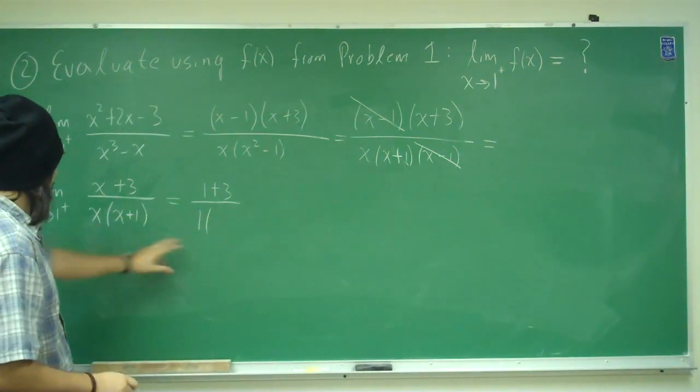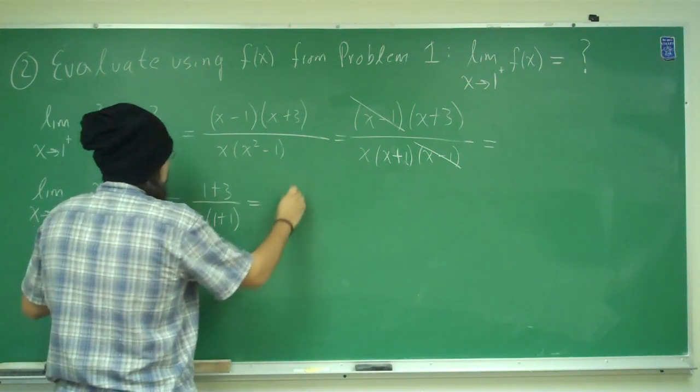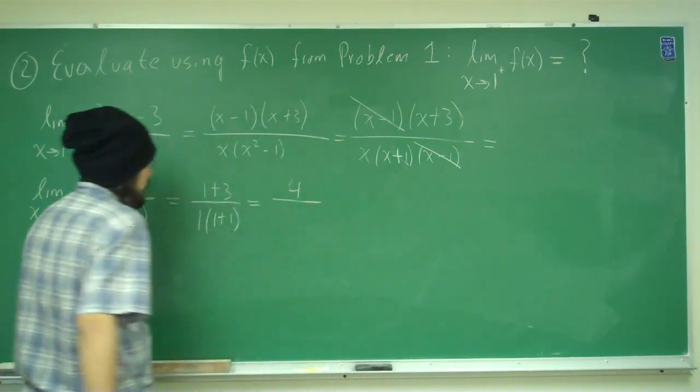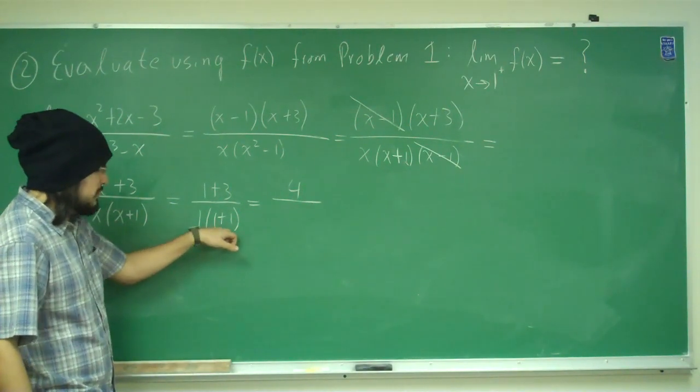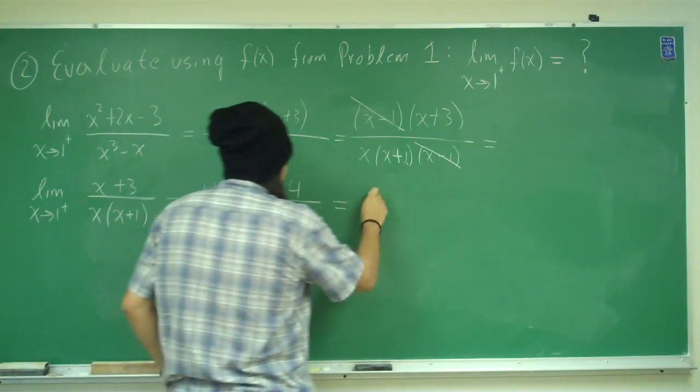Alright, so we plug in 1, we got 1 plus 3, 1, this is 1 plus 1. Alright, good, so that's 4 on the top, on the numerator, and then we have 1 plus 1 is 2 times 1, that's 2. So we got 4 divided by 2, and that's 2.